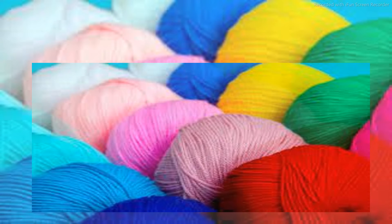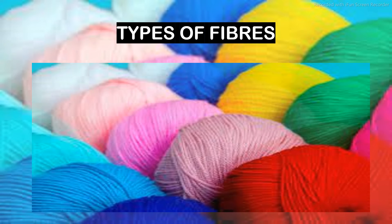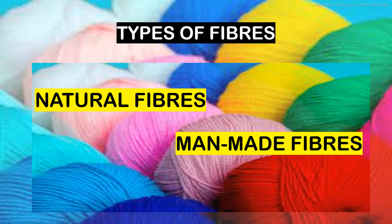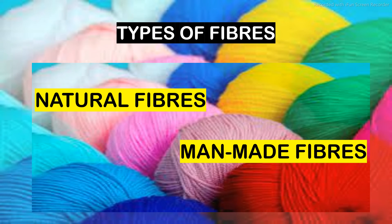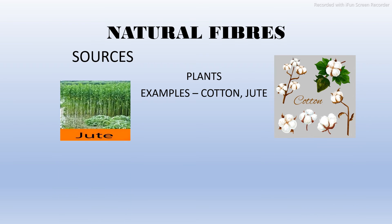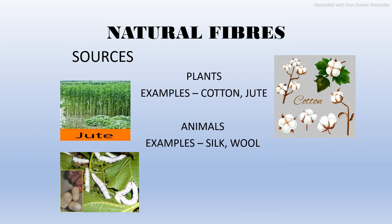The clothes are made up of fibers, which are of two types: natural fibers and man-made fibers. Natural fibers, as the name suggests, are obtained from natural sources — that is, plants and animals. From plants, we get cotton and jute. From animals, we get silk and wool.